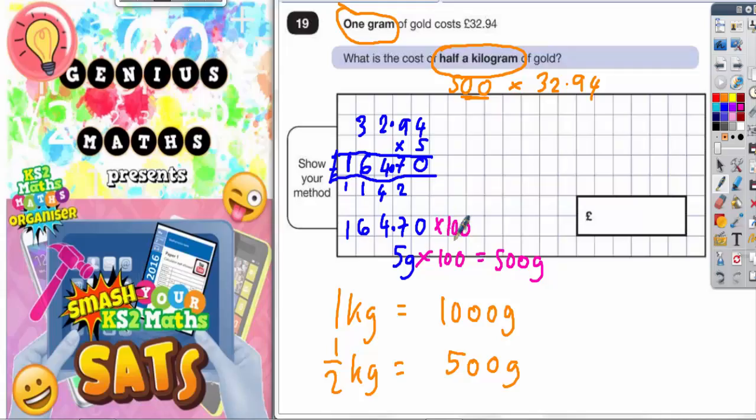Now as you know, if you multiply by 100, you move all the digits two places to the left to make the number bigger. Because times 10, you move all the digits one place to the left, or one place forwards. Times 100, you move all the digits two places to the left, or two places forward. And times 1,000, you would move all the digits three places to the left, or three places forward.